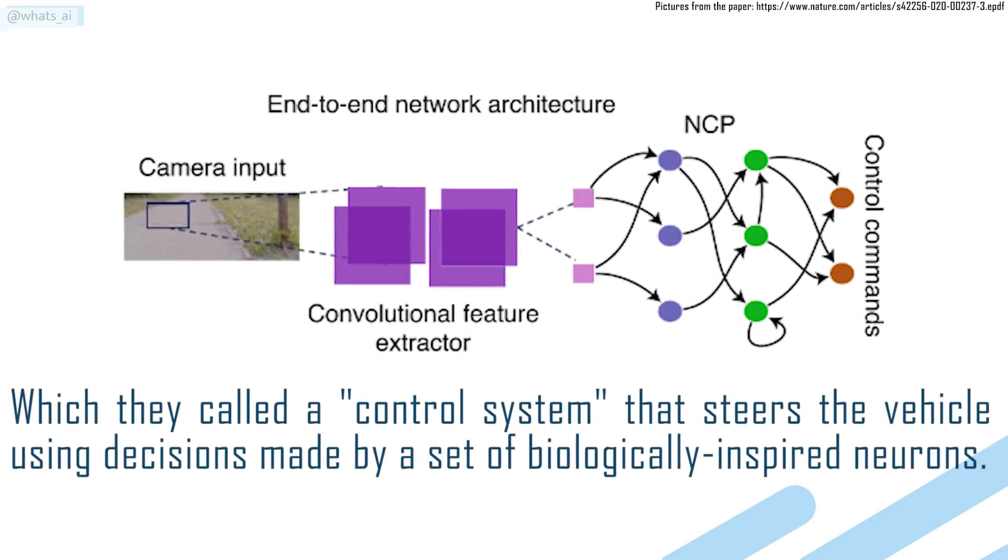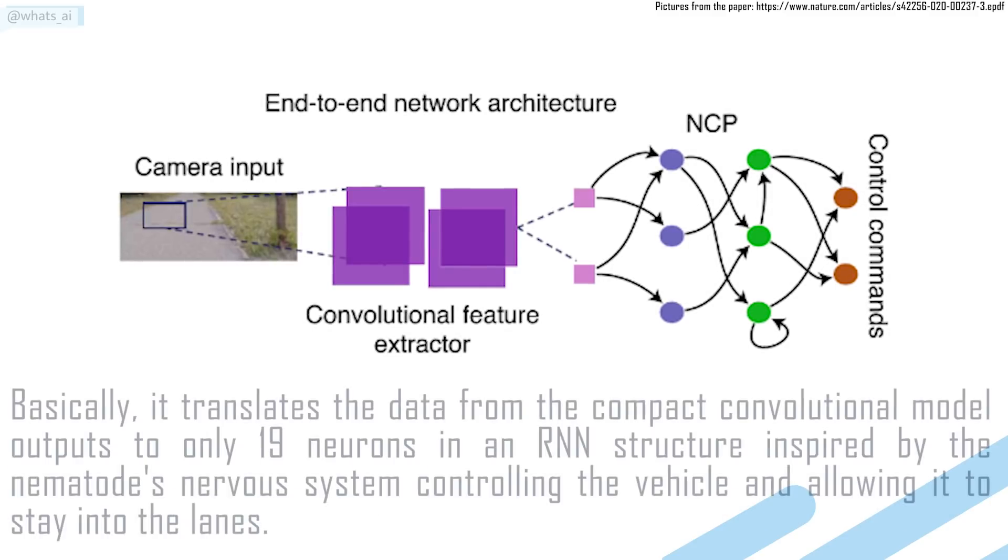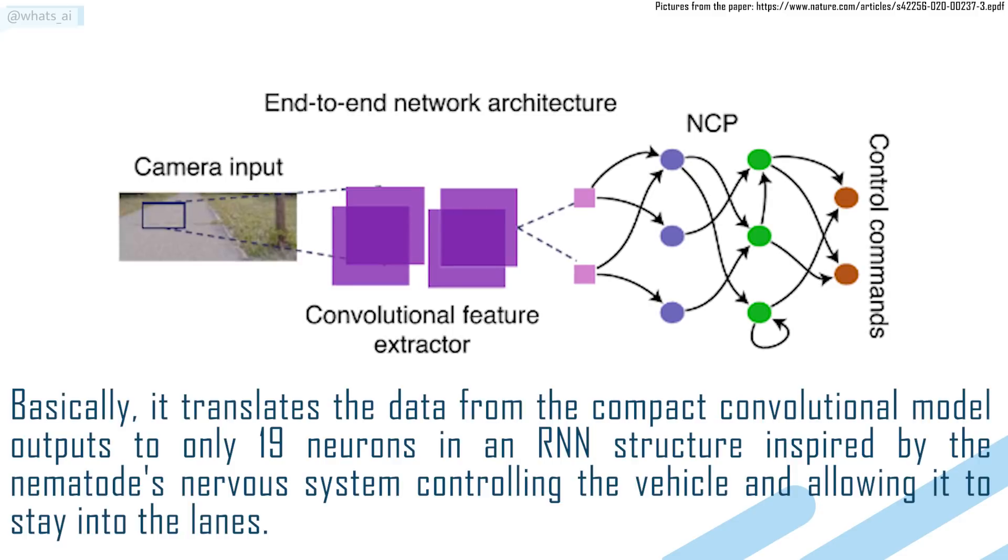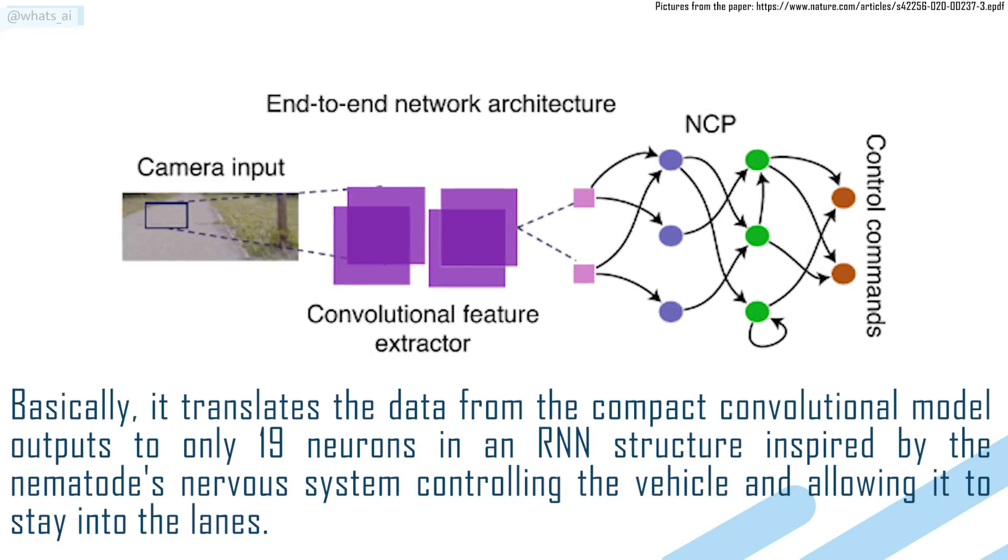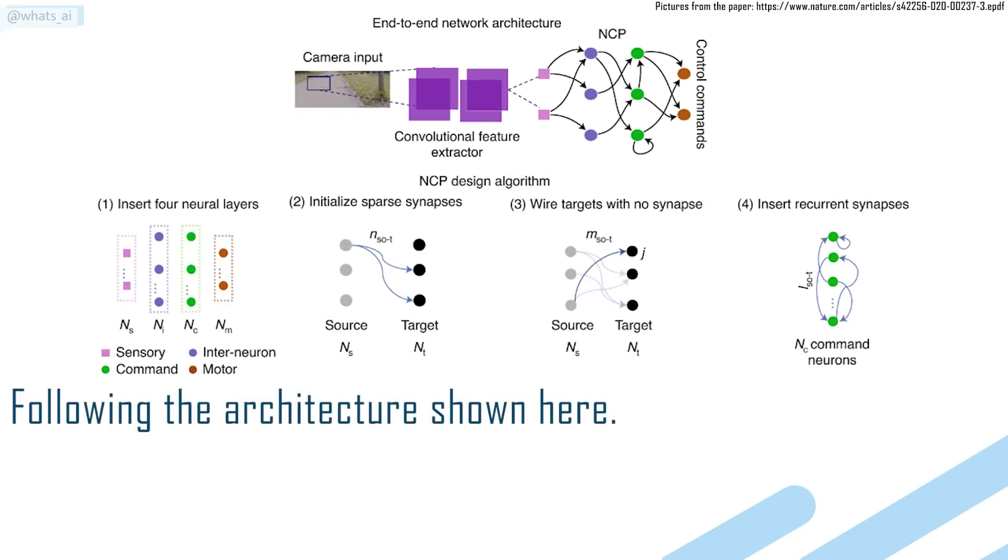The control system steers the vehicle using decisions made by a set of biologically inspired neurons. This control part is also called Neural Circuit Policy, or NCP. Basically, it translates the data from the compact convolution model output to only 19 neurons in an RNN structure inspired by the nematode's nervous system controlling the vehicle and allowing it to stay into the lanes, following the architecture shown here.